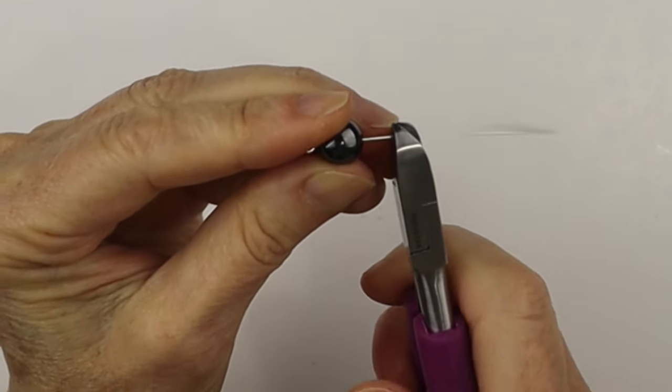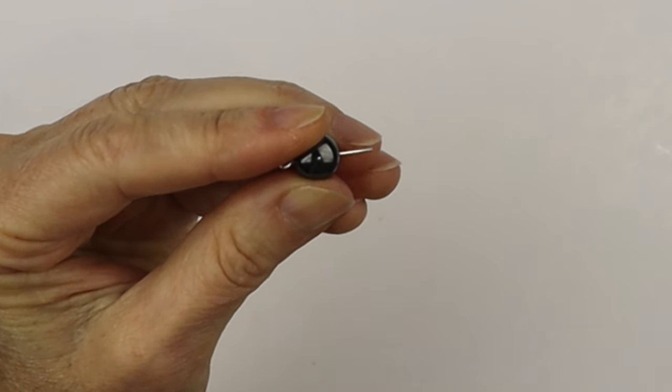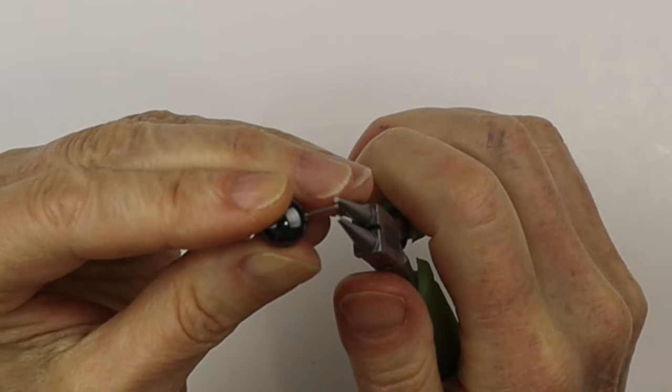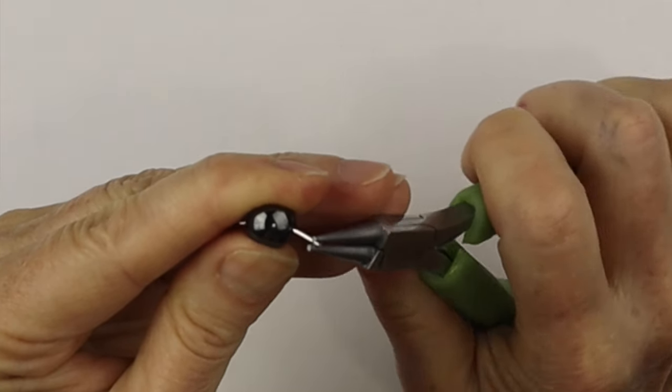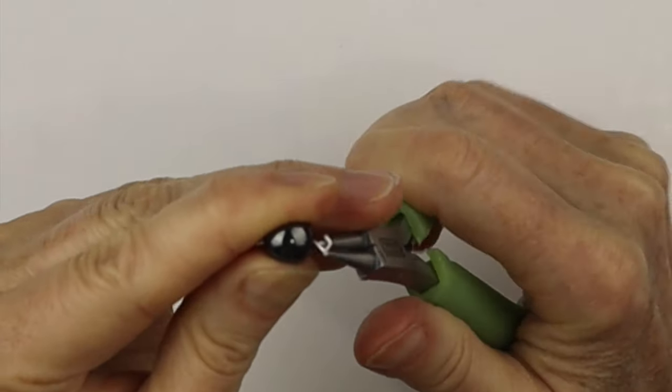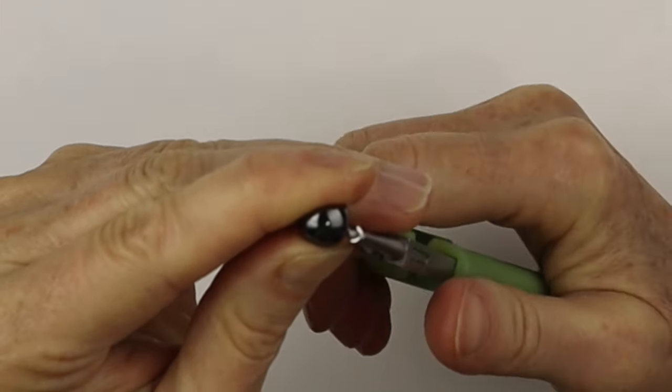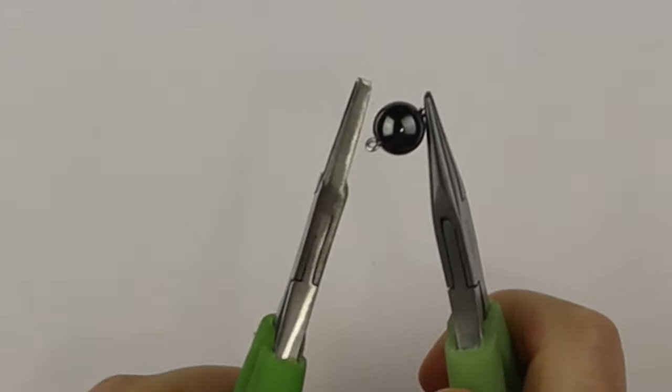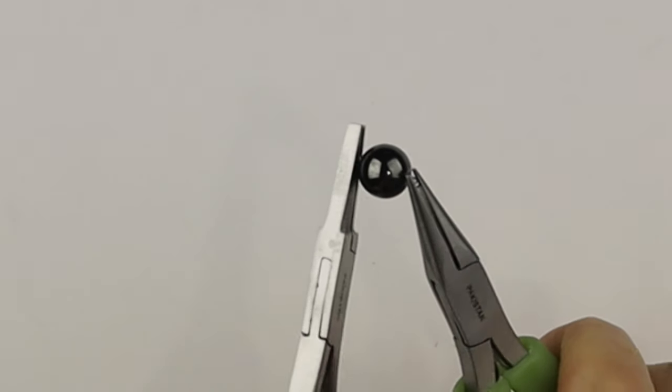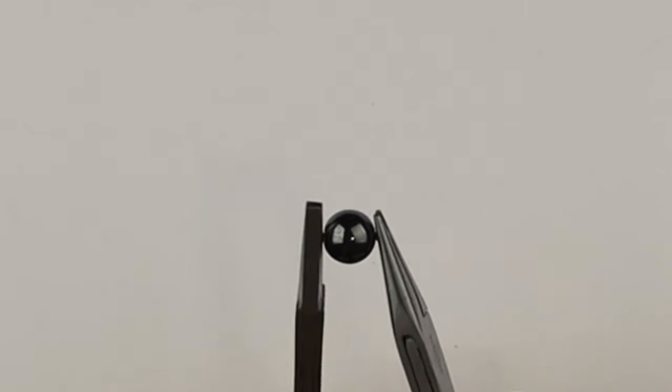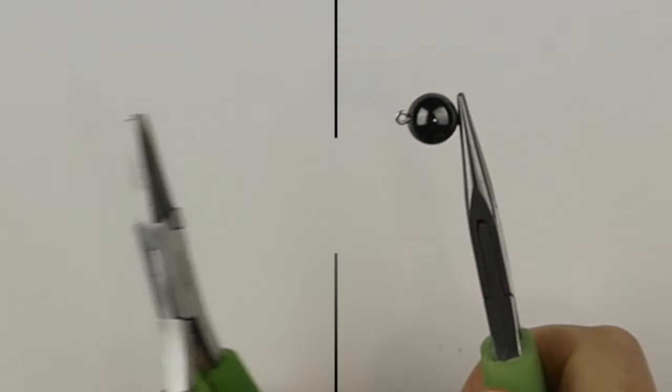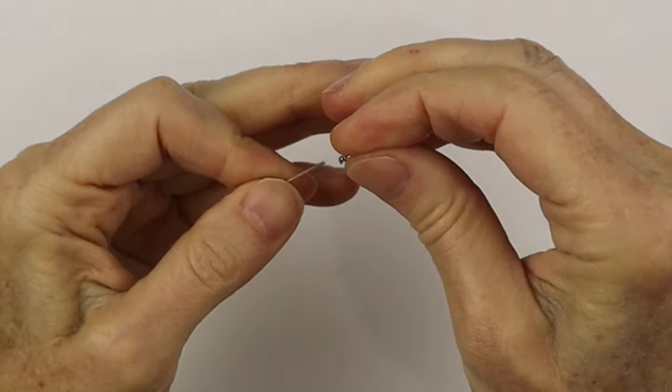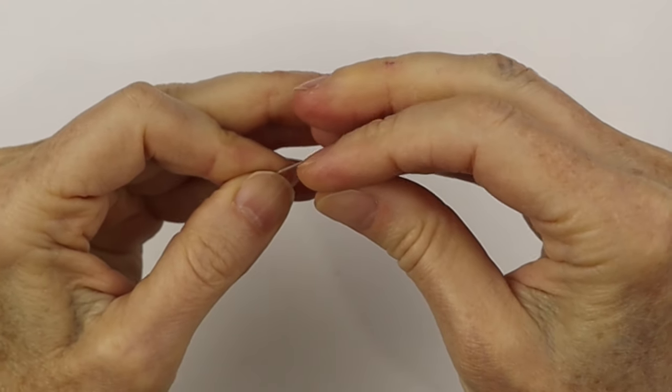And then take the round nose pliers, hold the wire and the bead, pull the wire back and around to make a centered loop. And from there, if the loops are a little off, take two flat nose pliers and just twist them so they're at the same angle.